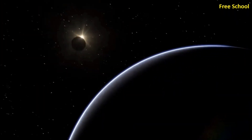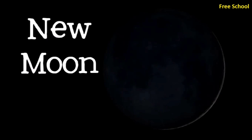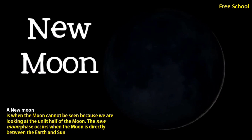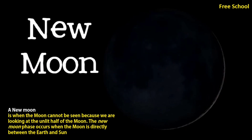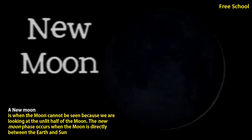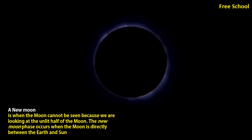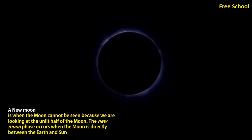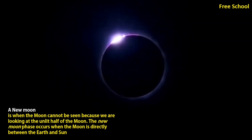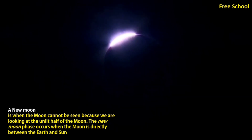At new moon, the moon appears completely dark because the unlit side is facing the Earth. The new moon is the only time in the lunar cycle when a solar eclipse can happen, because it's the only time...